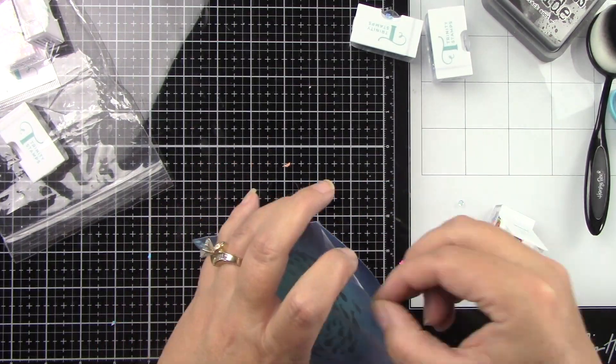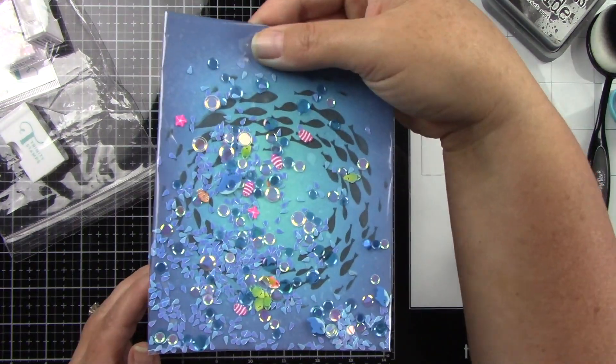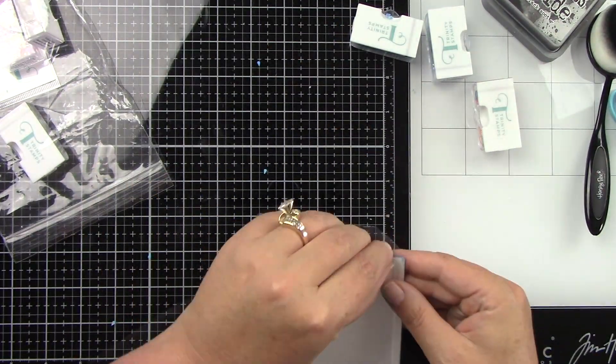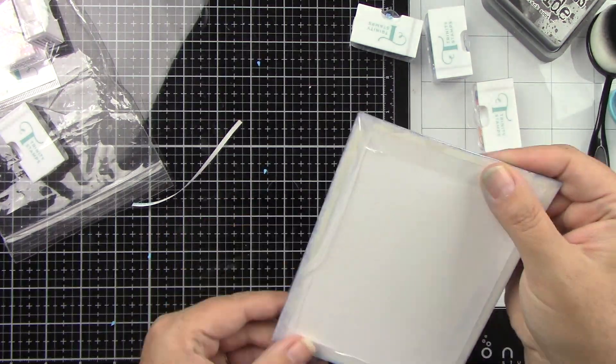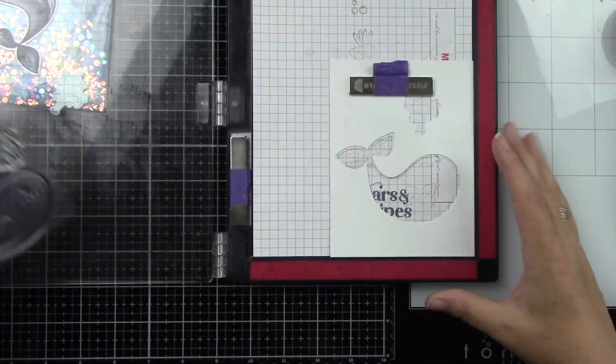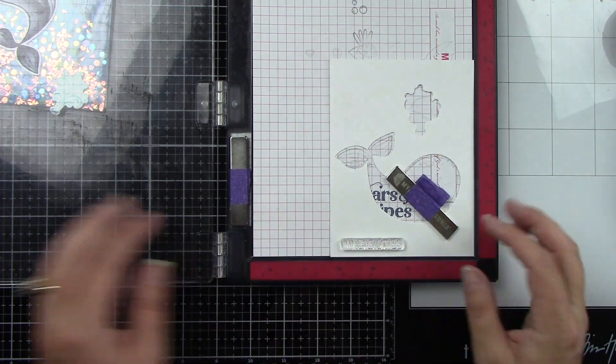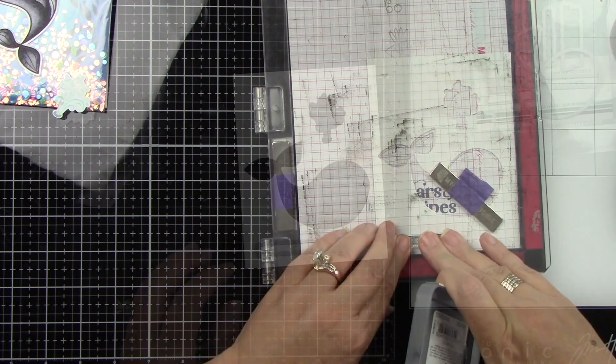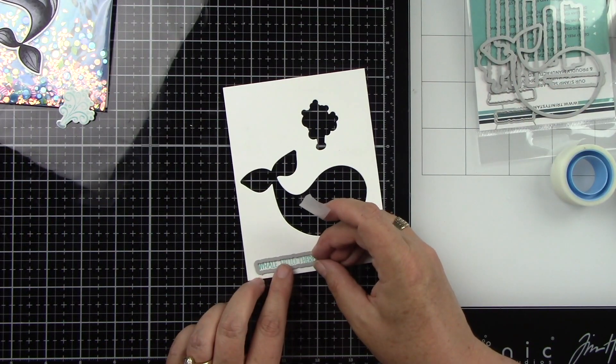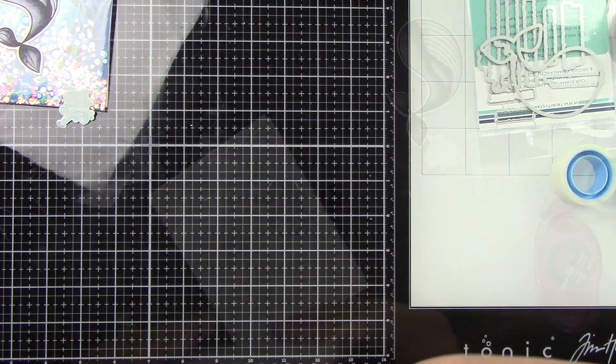I'm just going to pop those in there and then I can peel back that release tape making sure everything shakes around good. Make sure I have enough shaker bits and then I can fold that piece down on the top and literally you guys that's how simple it is. The sentiment that I'm going to use says Whale Hello There with an exclamation. I stamped that in the Mermaid Lagoon ink and use the coordinating die to die cut that out.